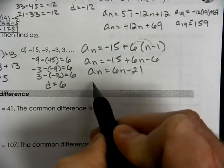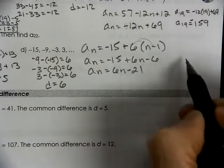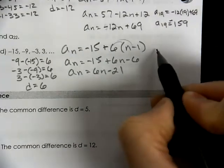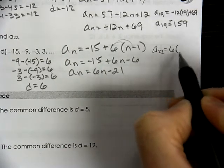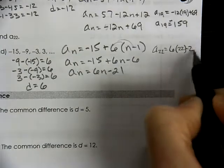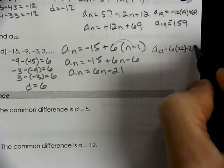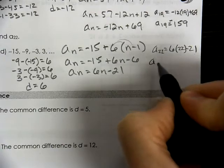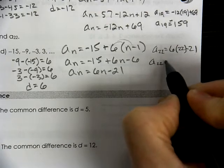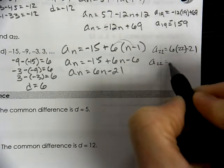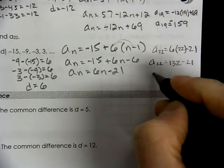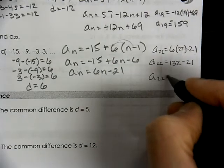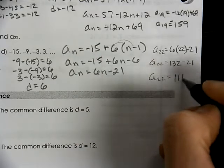And if we wanted to figure out what the 22nd term was, 6 times 22 minus 21. It's going to be 132 minus 21, which is 111.